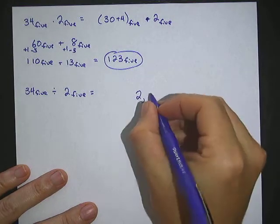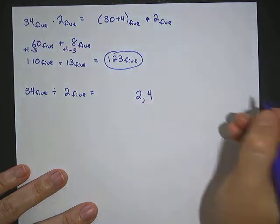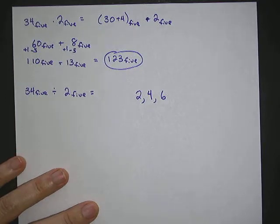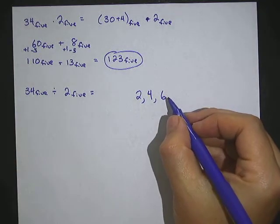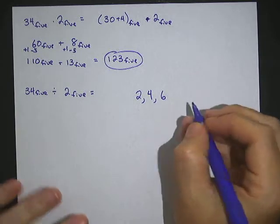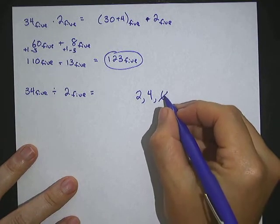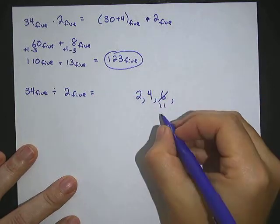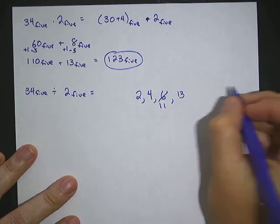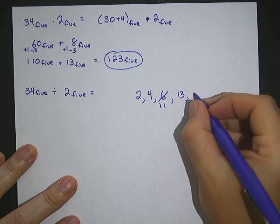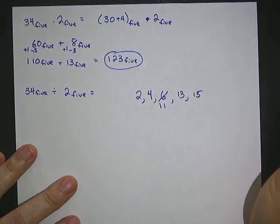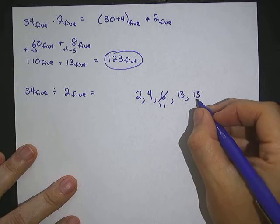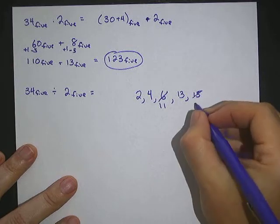The first multiple is 2. The next, 2 plus 2, is 4. The next would be 6, but we're in base 5 so you can't have a 6. We convert by subtracting 5 and adding 1 to the digit to the left, so 6 becomes 11. Adding another 2 gives us 13 base 5. The next is 15 base 5, but 15 is too big in base 5, so we subtract 5 from the units digit — it becomes 0 — and add 1 to the tens digit, giving 20.